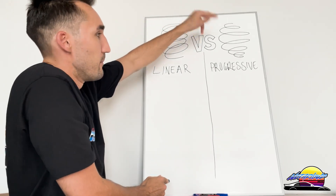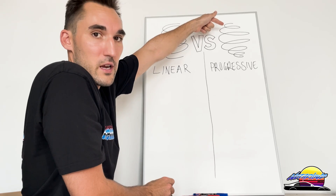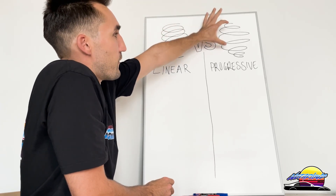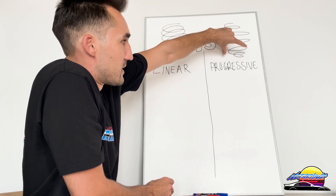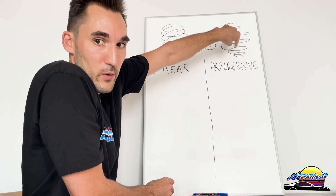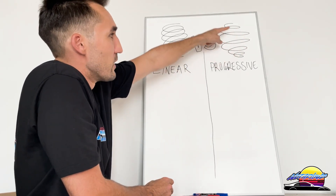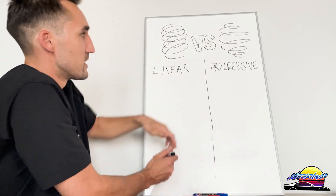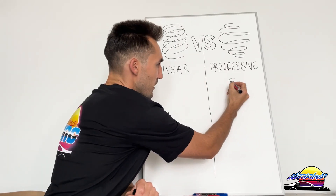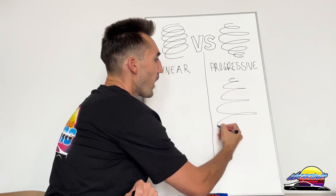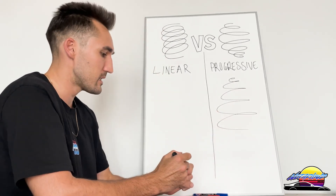A progressive spring, on the other hand, has different gaps between the coils and sometimes different widths as well. When you see a spring that looks inconsistent — sometimes it starts off tight and gets wider — that's a common one for a lot of factory cars, and that is a dead giveaway that you're looking at a progressive spring.